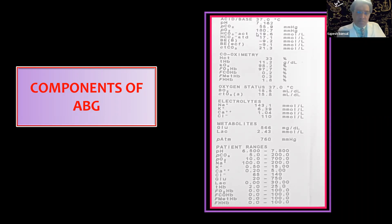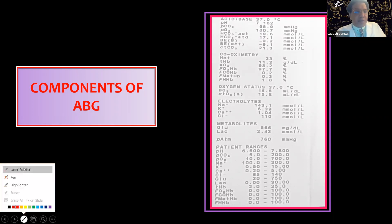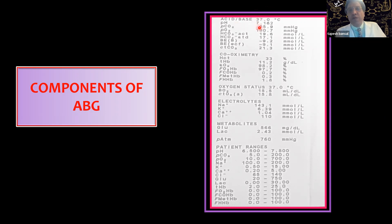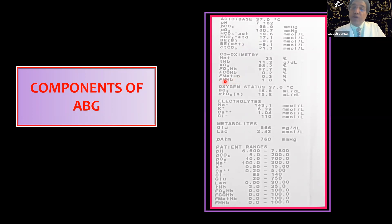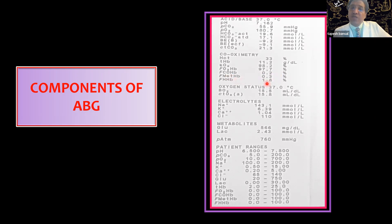Coming to the components of ABG: a very important component is temperature. Have you ever wondered what this means? We all know the ABG reads temperature at 37 degrees, but does it have any bearing? I will discuss what is actual base excess, standard base excess, and base excess ECF. Many of you probably don't know the difference or which one to use. Then there is an important component you may not have realized — this is methemoglobinemia. This gives the amount of methemoglobin in the blood, encountered in certain poisonings. Recently we had a patient of Dapsone poisoning and we used this value to treat the patient.